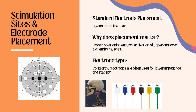Electrode placement is crucial for effective stimulation. Standard electrode placement in MEPs is C3 and C4 on the scalp. Using C3 and C4 ensures bilateral motor activation, which means it activates both upper and lower extremity muscles. Alternative sites, like C1 and C2, may be used depending on surgical needs. Additionally, the preferred electrodes during MEP are corkscrew electrodes, because they have lower impedance and more stability in their placement.